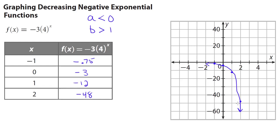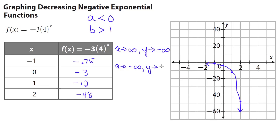Describing the behavior of this decreasing negative graph: on the right end, as x approaches positive infinity, the y values decrease forever, so y approaches negative infinity. On the left end, as x approaches negative infinity, the curve gets closer and closer to the x-axis, so y approaches 0.